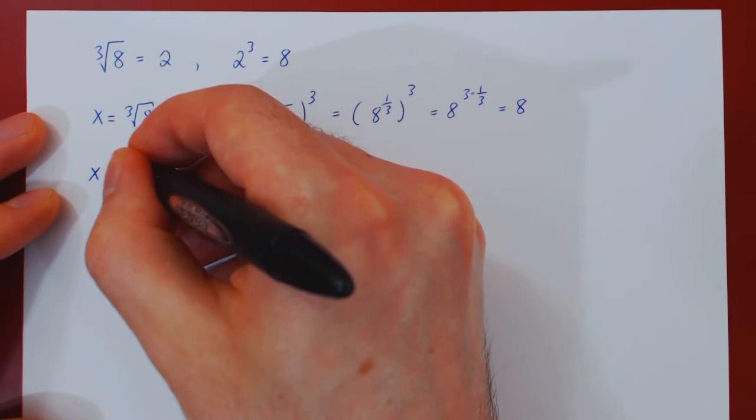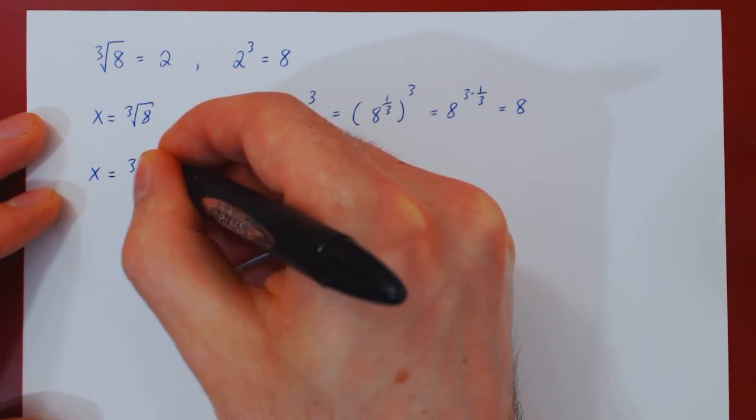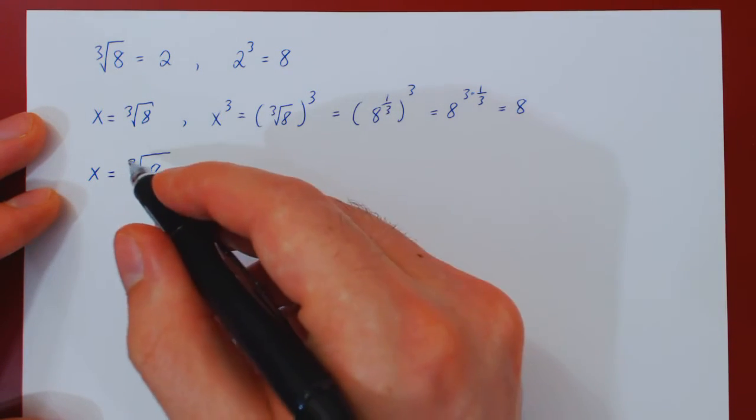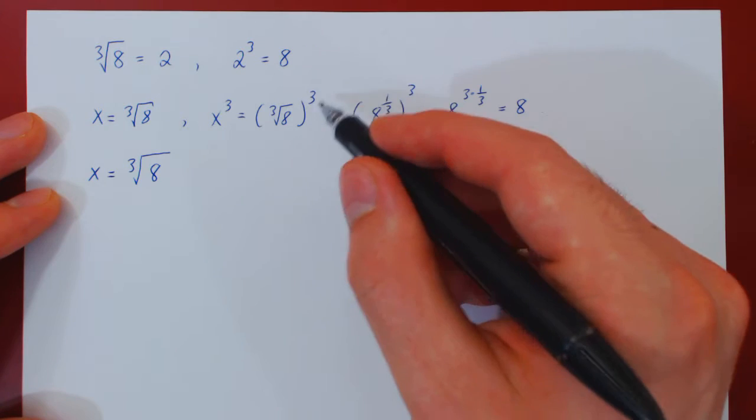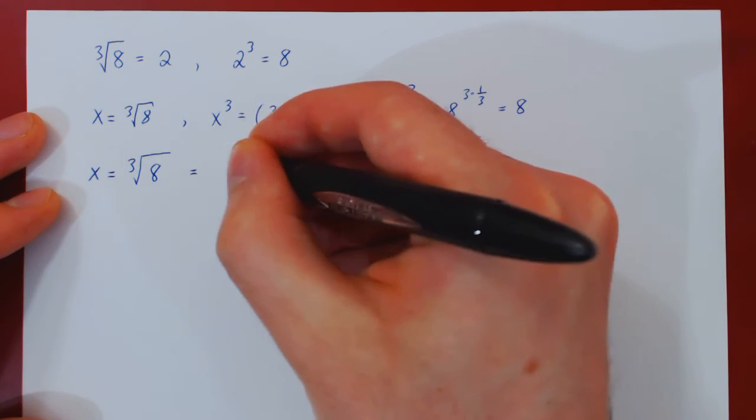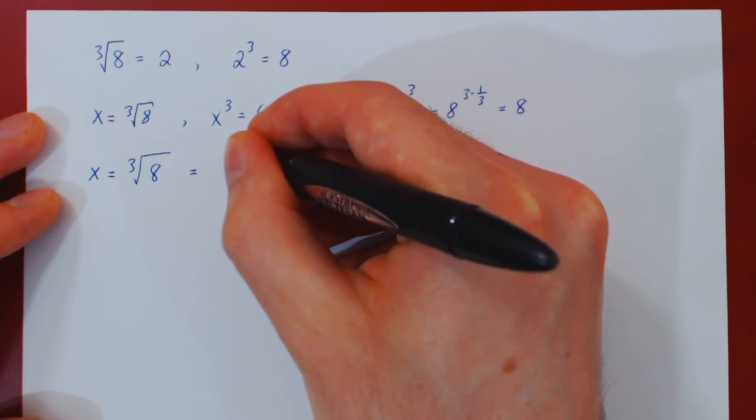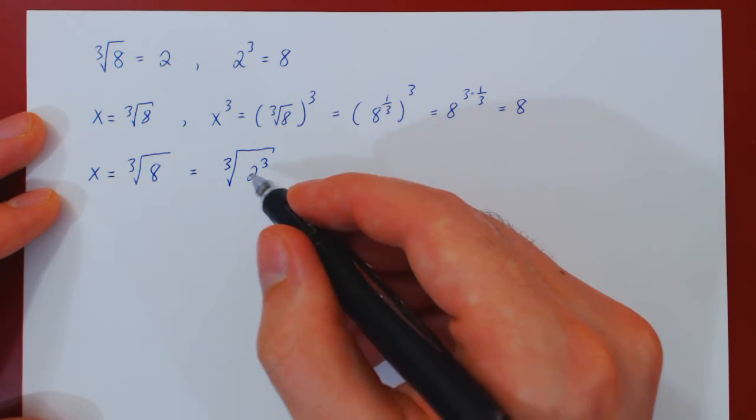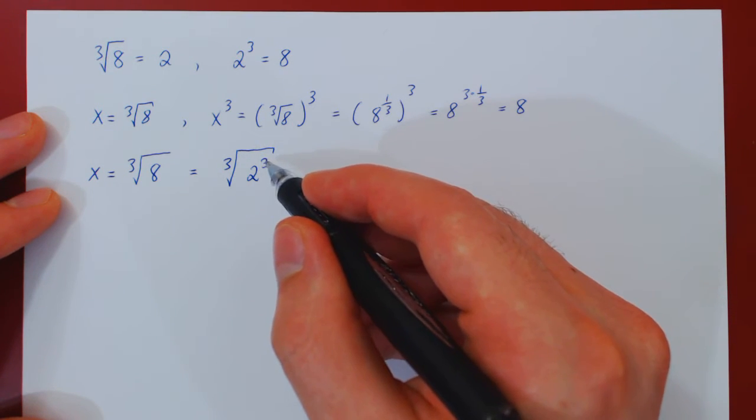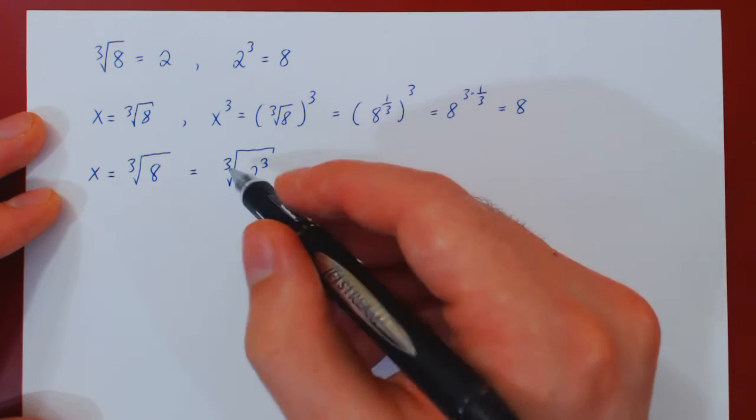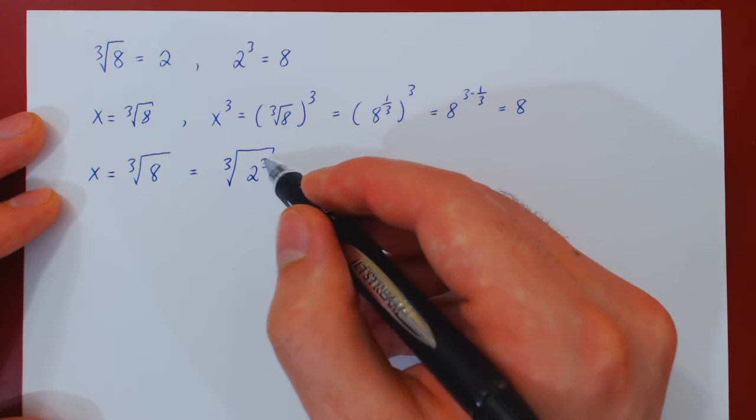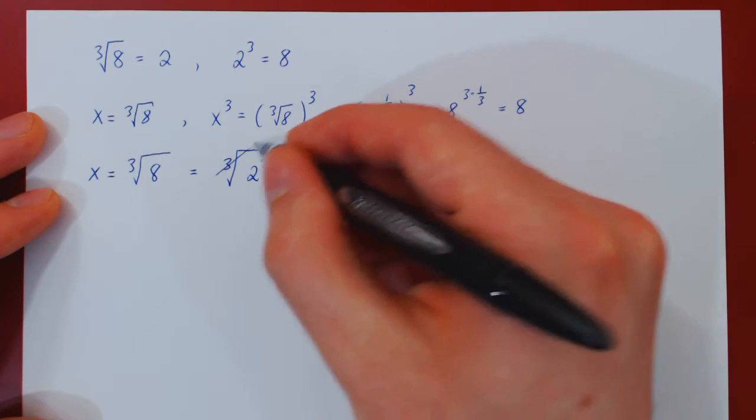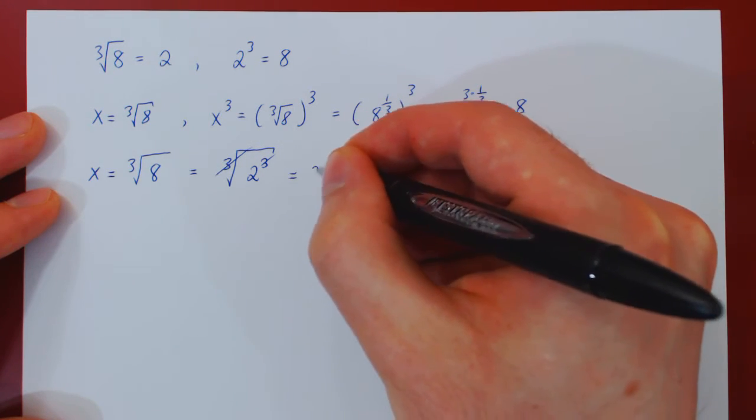So if x is the cube root of 8, and again thinking of the cube root as the inverse of the cube function, we will simply rewrite 8 as 2 cubed. So if you take 2, cube it, then take its cube root, well, these two operations are inverses of each other, so they cancel, and you're left, of course, with 2.